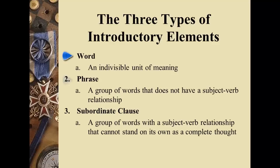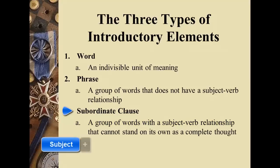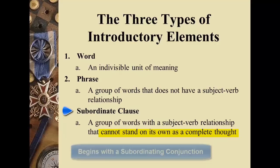The three basic types of introductory elements are words, phrases, and subordinate clauses. By definition, a word is an indivisible unit of meaning — if you put letters together and can't break them into something smaller that means something, you have a word. Phrases, on the other hand, are groups of words that don't have subject-verb relationships. A phrase is two or more words, but it cannot stand on its own as a complete thought. A subordinate clause is a group of words that does have a subject-verb relationship, but it does not stand on its own as a complete thought because it begins with a subordinating conjunction.